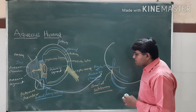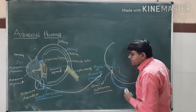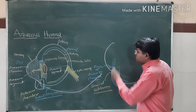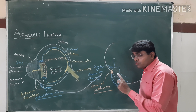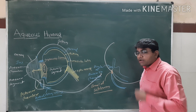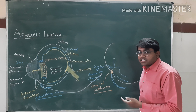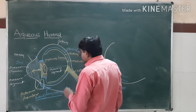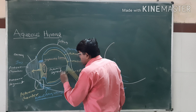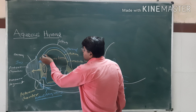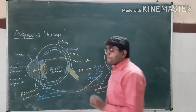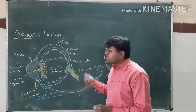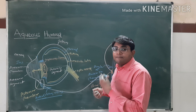Due to some conditions, if the angle of the anterior chamber is decreased, the Canal of Schlemm becomes closed and drainage of aqueous humor is not possible. This causes increased intraocular pressure, and this condition is known as glaucoma. Due to the increased intraocular pressure, there is cupping of the optic disc and pressure atrophy of the retina, and due to this the patient becomes blind.